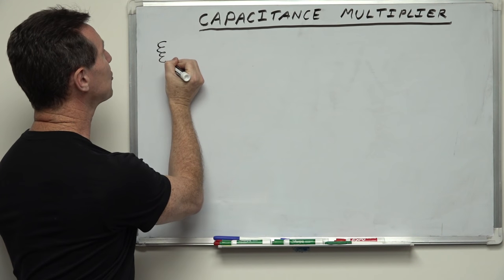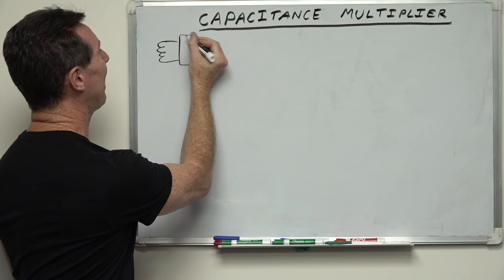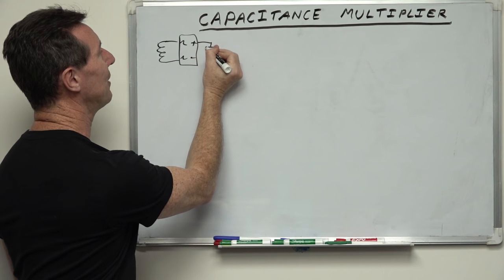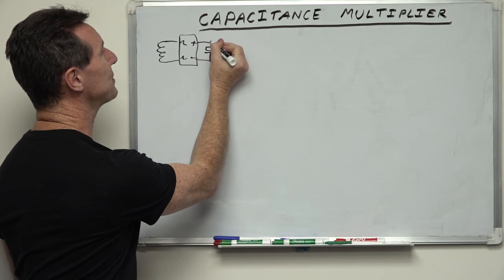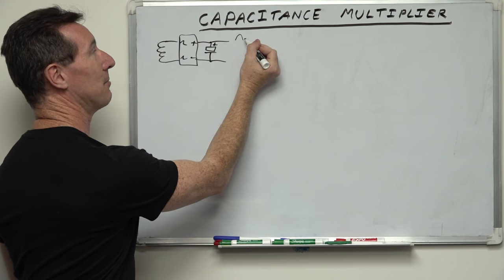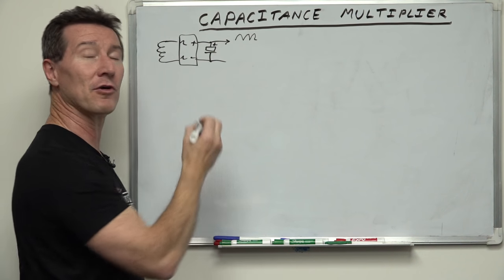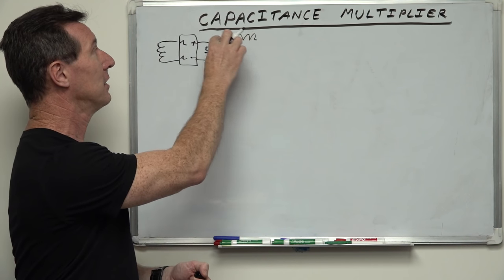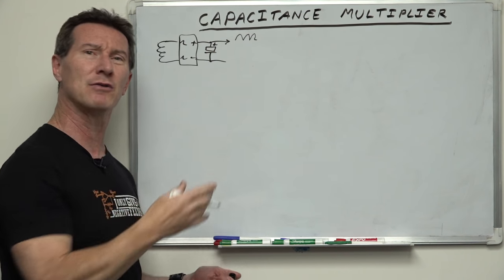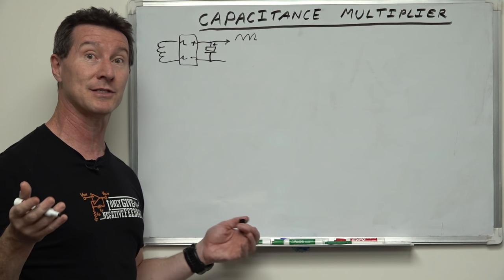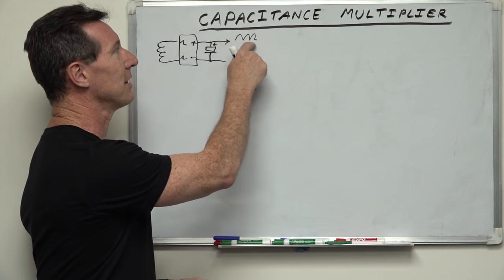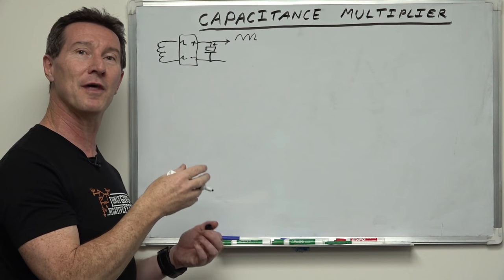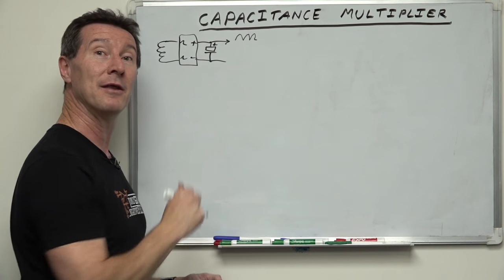You might have a mains transformer going into a bridge rectifier with an output capacitor, and you're going to get ripple on there. This is very common - for example if you're building an audio amplifier and you want to generate positive and negative rails that are really clean, especially for class A amplifiers. You want to get rid of that ripple. You can increase the capacitance, but really you might want to add some post regulation.